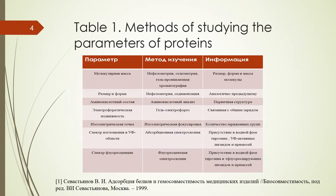Here is Table 1, which lists physical and chemical methods of studying the parameters of proteins. For example, to explore the molecular mass of a protein you can use nephilometry, osmometry, or gel chromatography, so you can find out the size, form, and mass of the molecule, and so on.